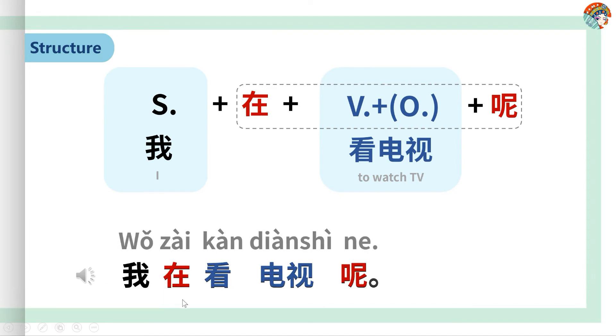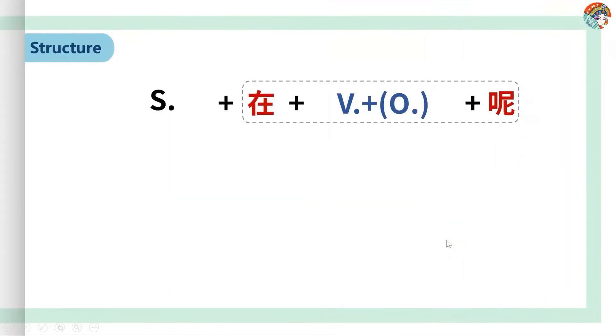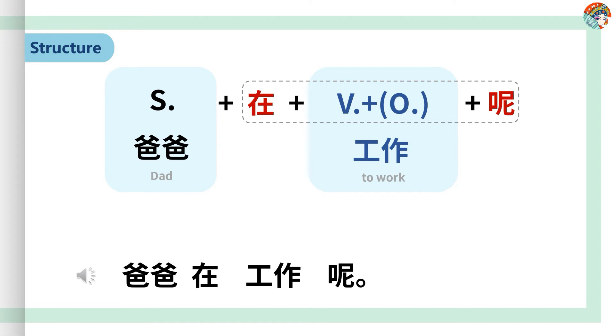Of course, like we explained before, you can also say 我在看电视 or 我看电视呢. Let's continue. The structure is here. The subject is 爸爸, and the action in progress is 工作. So the sentence is 爸爸在工作呢.